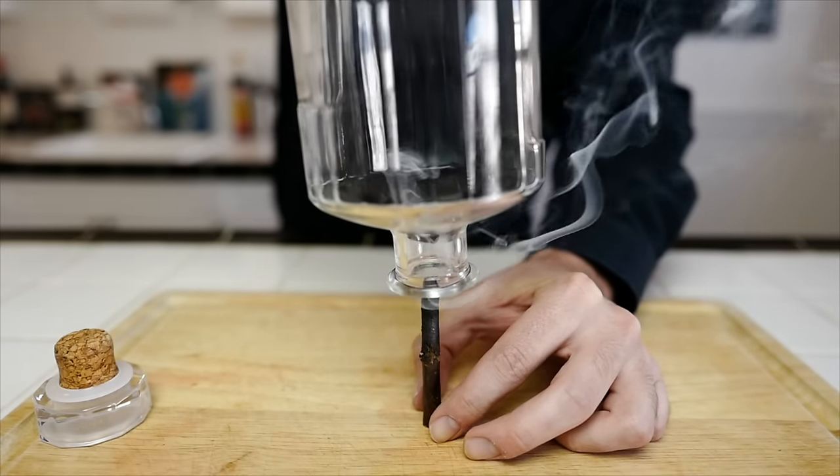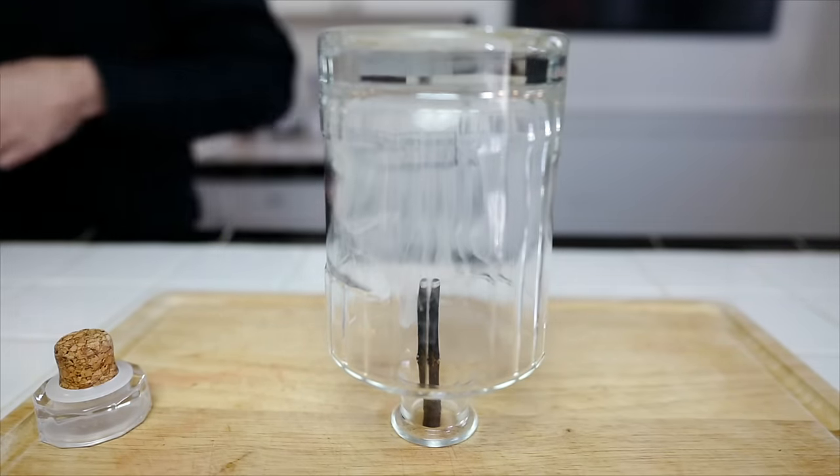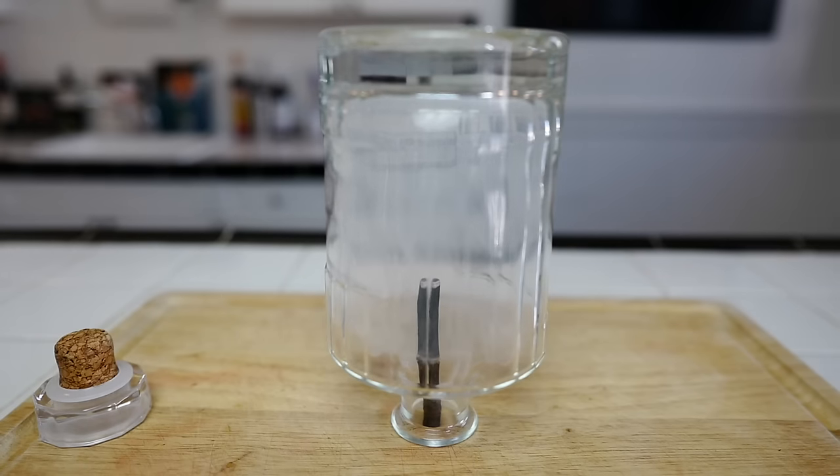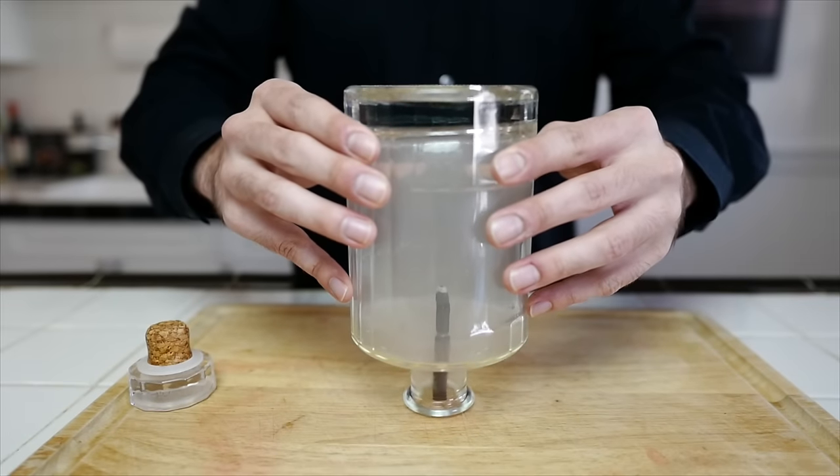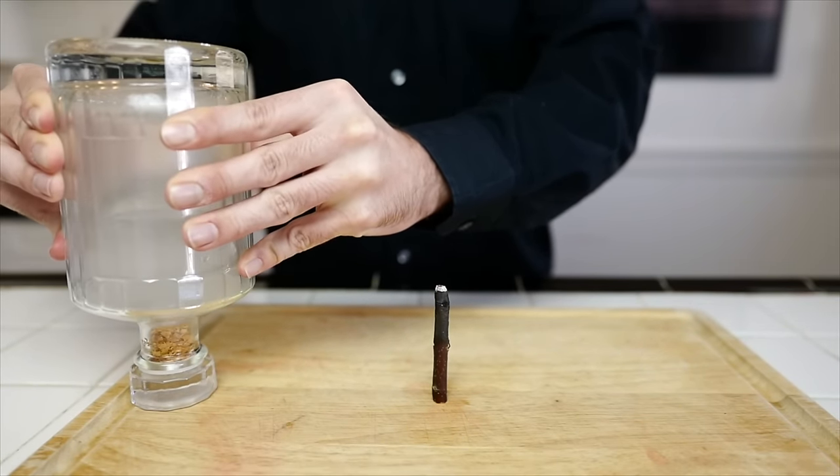Once the wood has been lit, extinguish the flame and immediately place the glass container over the stick to capture the smoke. Leave the wood in long enough so the glass becomes opaque. Then remove the glass and immediately seal it.